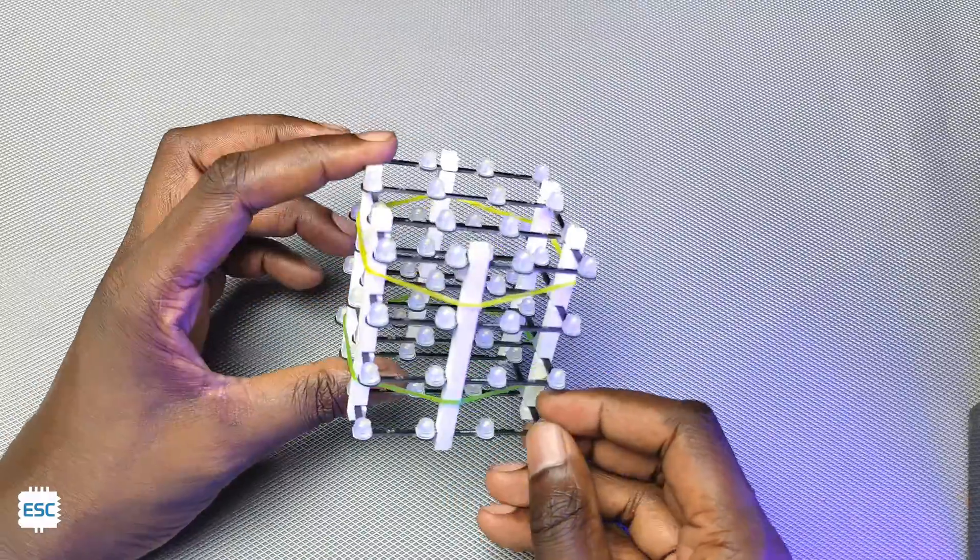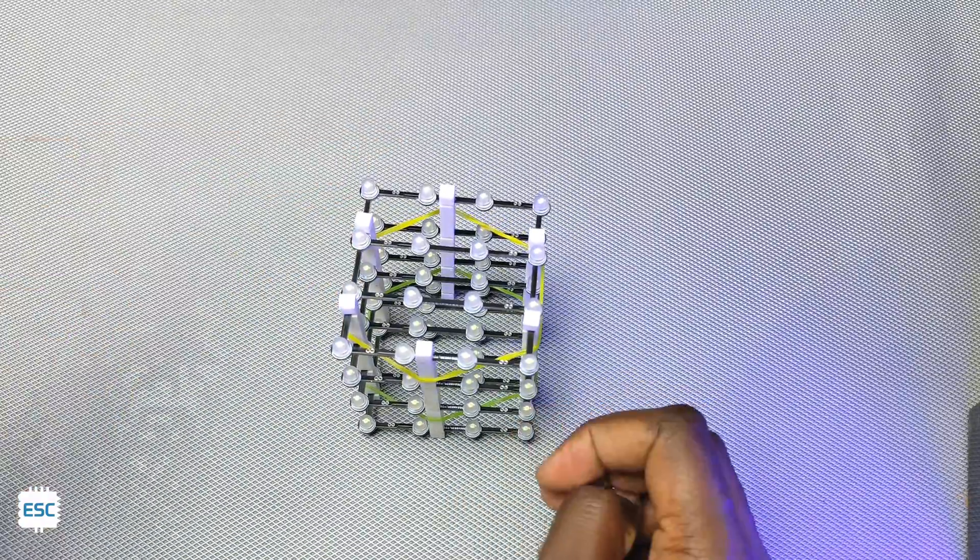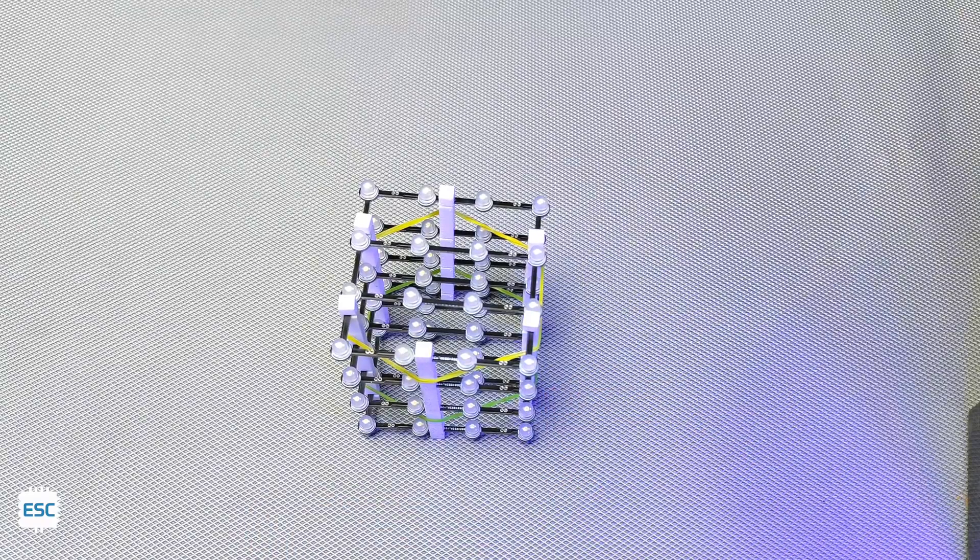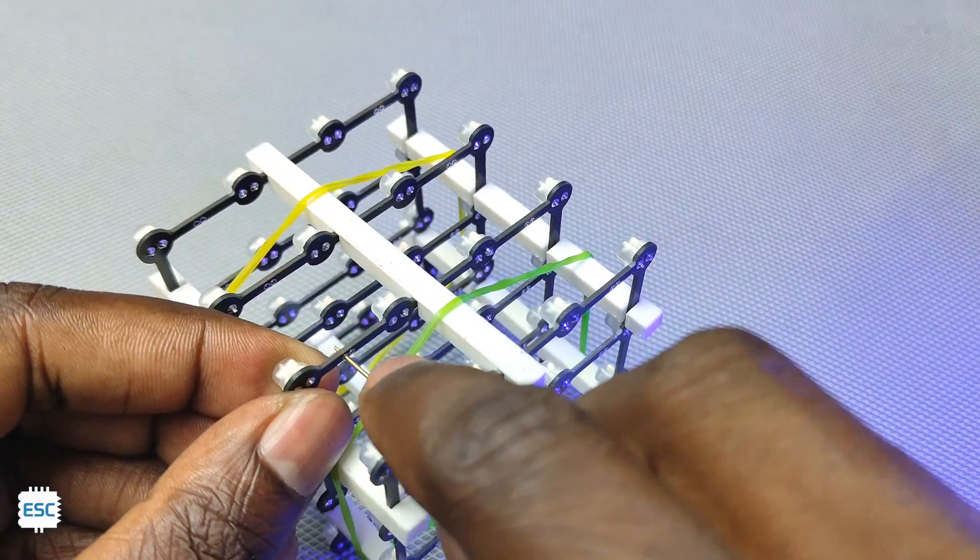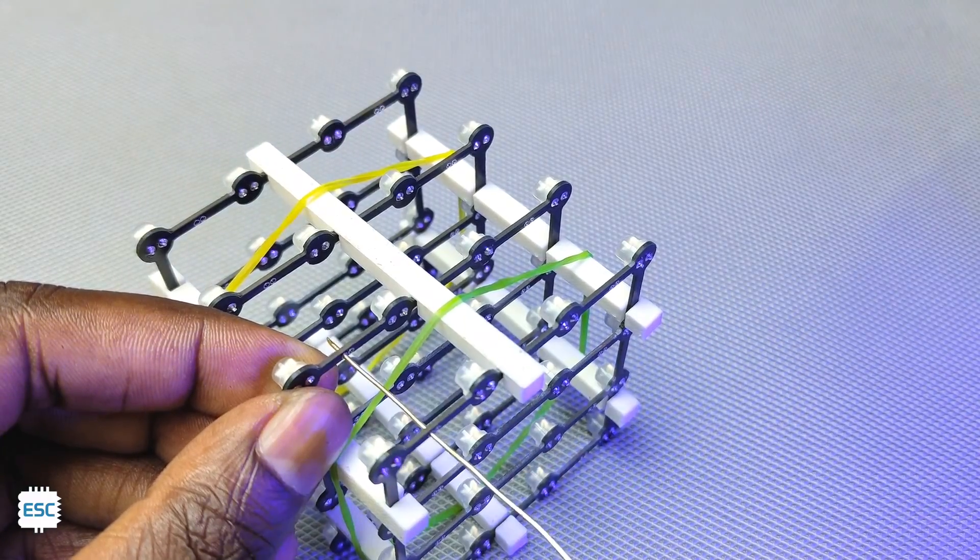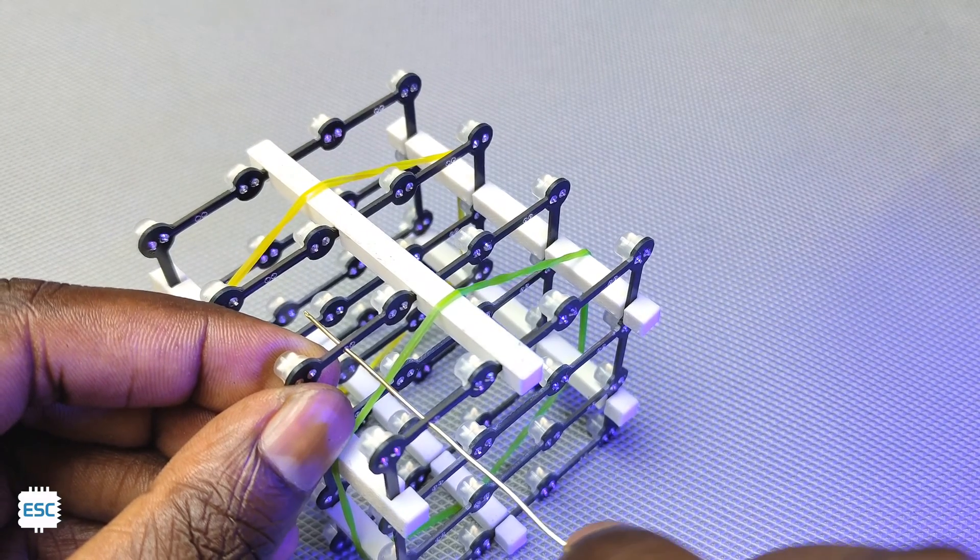With the help of these jigs, I stacked the four layers and secured it with some rubber bands. Using 0.8mm brass wire, I connected all the anode lines of each layer like this and soldered.